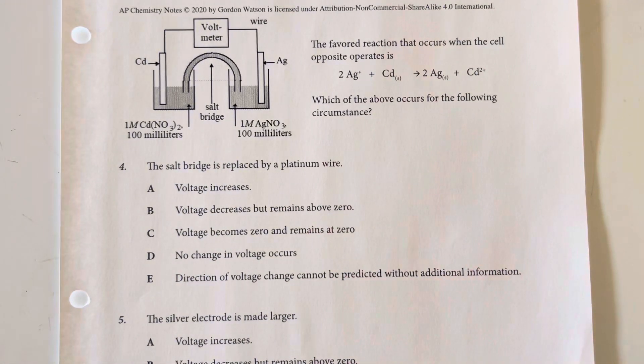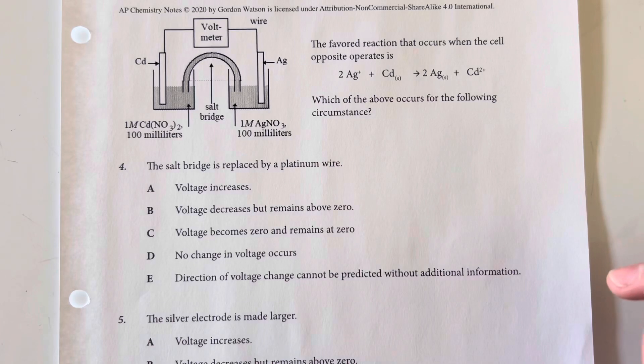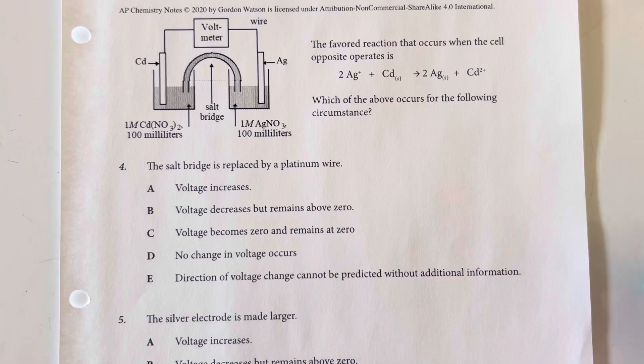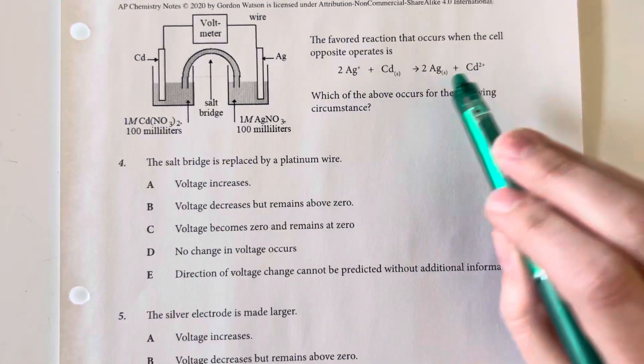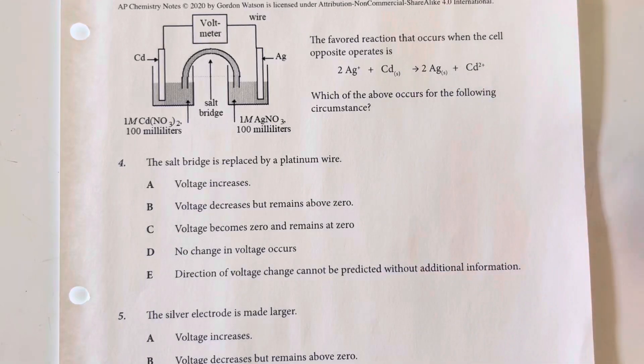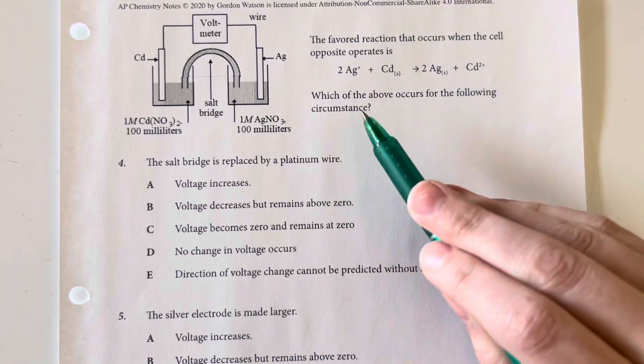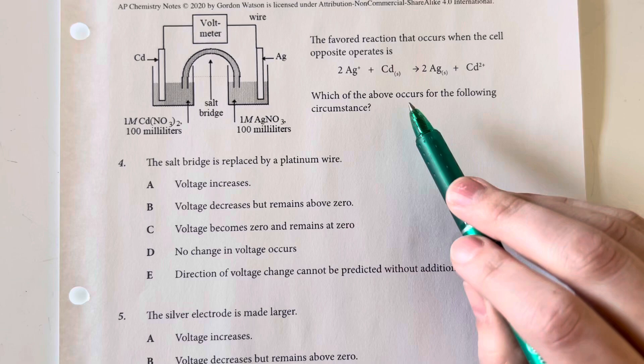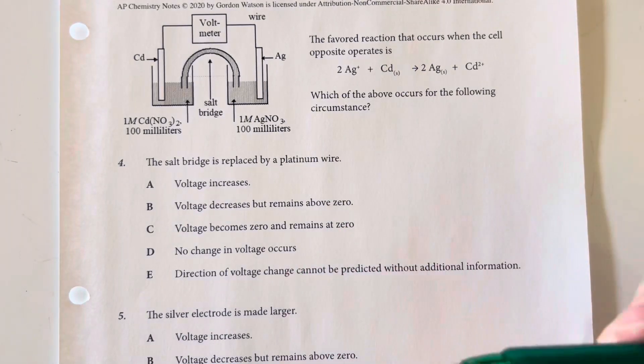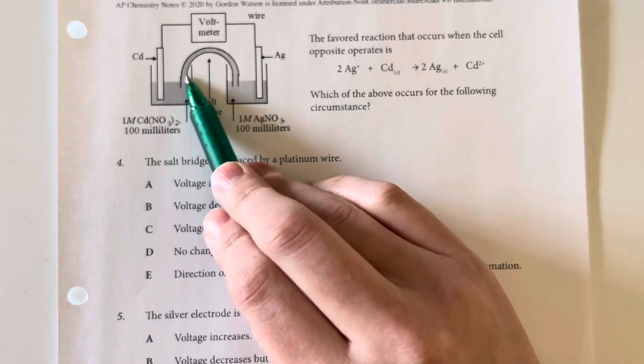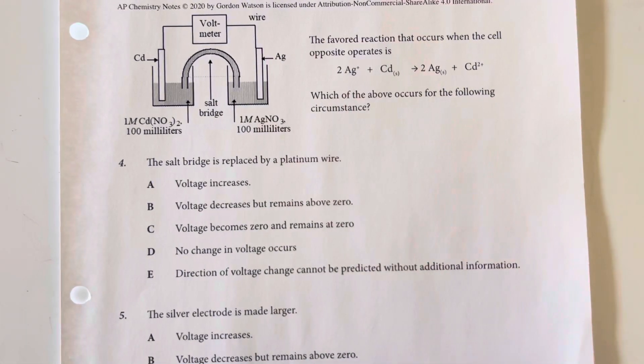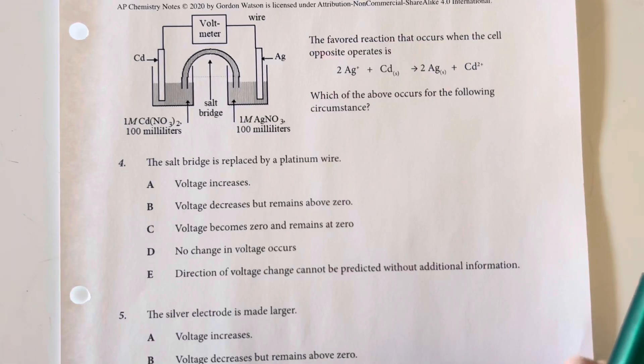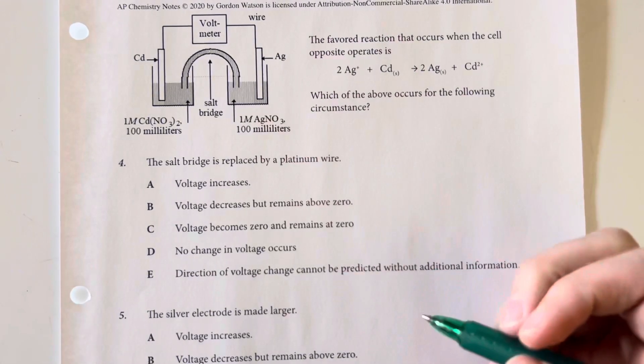The salt bridge is replaced by a platinum wire. The favored reaction occurs in the cell where you have silver and cadmium. Which of the above occurs for the following circumstance? If we remove the salt bridge and replace it with a platinum wire, again, no salt, no bridge—we cannot have a cell.